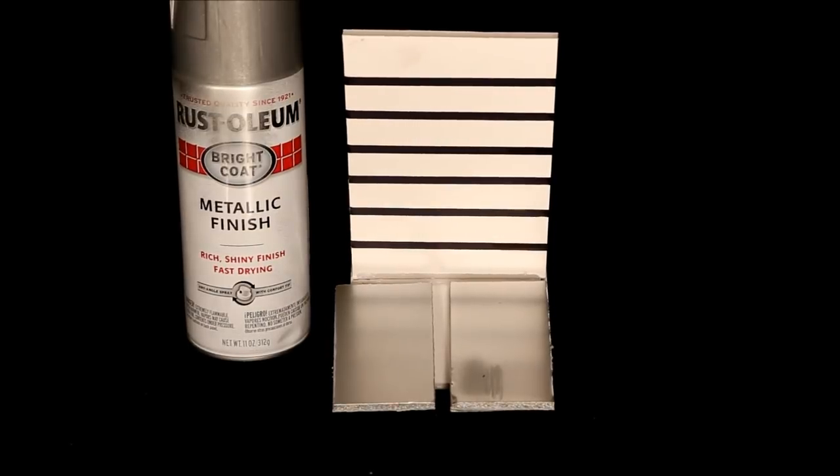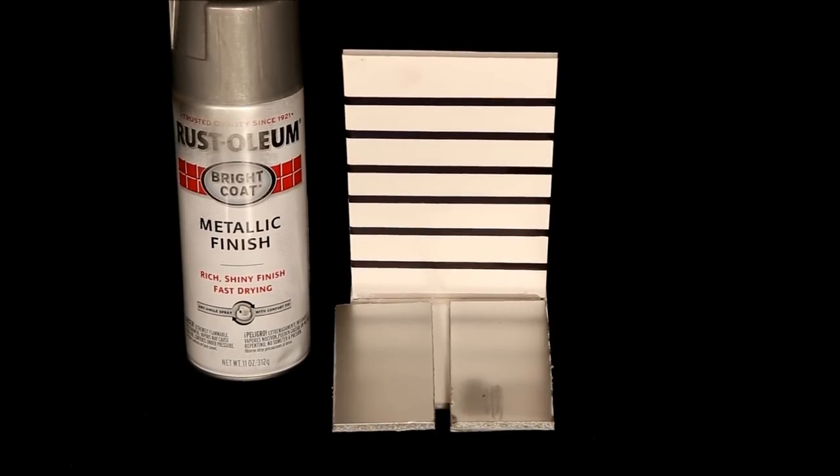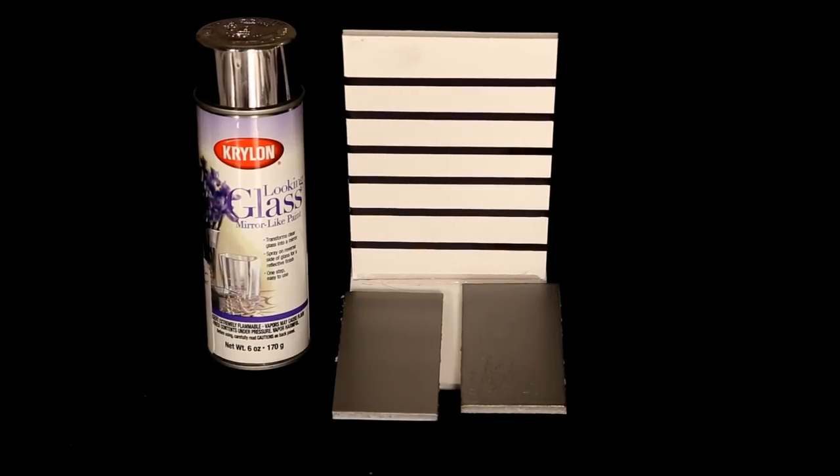Rustoleum Aluminum produces a very soft reflection. Krylon Looking Glass Mirror-like Finish is one of the worst.